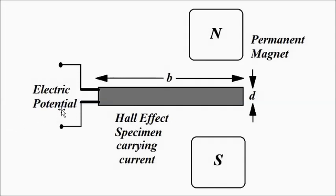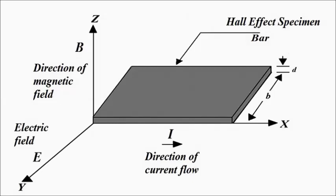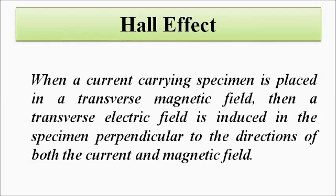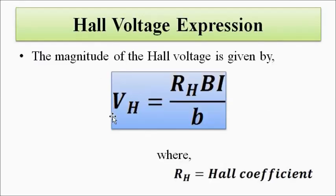How are this electric potential, the magnetic field, and current related? This is given by the Hall Voltage expression. The Hall Voltage expression relates the Hall Voltage — the electric potential induced because of the electric field — the magnetic field flux intensity, and the current flow. The Hall Voltage, which is the voltage produced due to the induced transverse electric field, is given by: V subscript H equals R_H times B times I divided by small b.